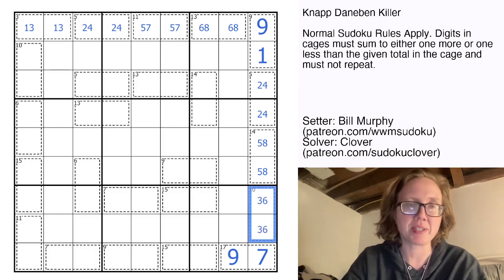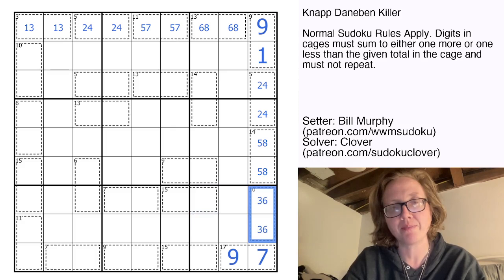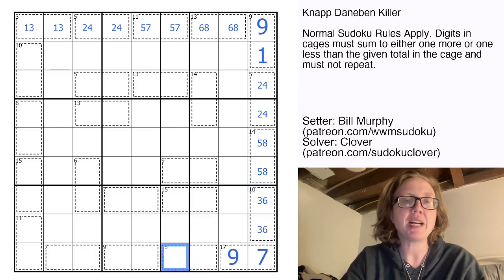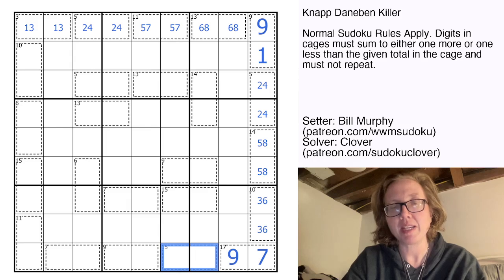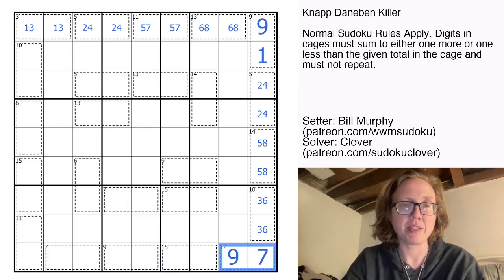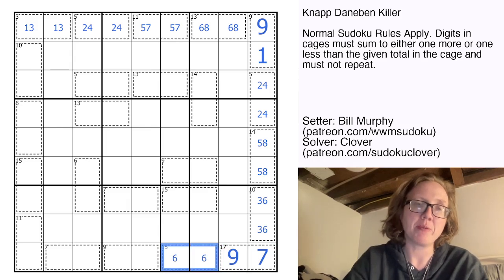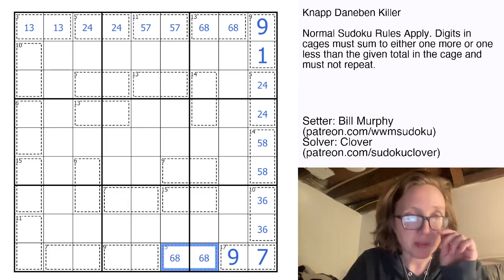That means this 10 clue is three plus six, which is nine, which checks out. Fifteen, we cannot go up by one here because we can't go up to 16, we've already used both of the digits involved in that. So we have to be going down by one to 14, six plus eight.